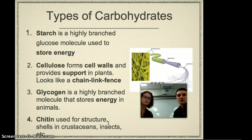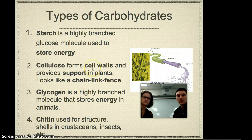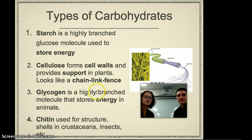Starch is a highly branched glucose molecule used to store energy. That's probably one of the primary purposes of carbohydrates — to store energy short term. Think about athletes or long distance runners; they'll consume sugar packets to help give them energy while they're running or working out. Another example is cellulose, which forms cell walls and provides support in plants — it kind of looks like a chain link fence. And then you also have glycogen, which is like animal starch, in that it stores short term energy in animals.